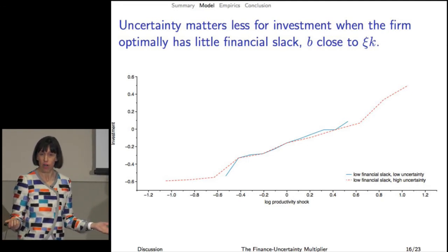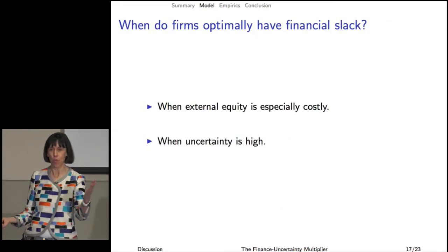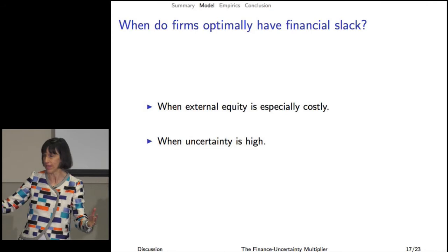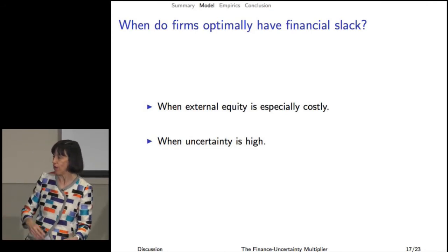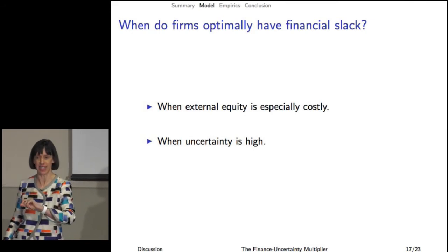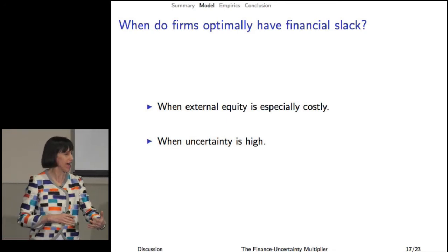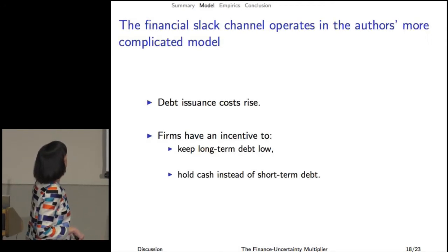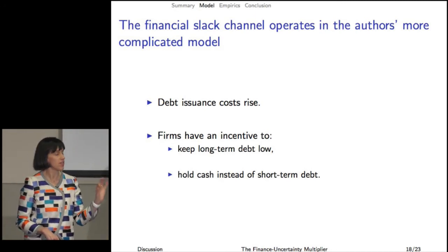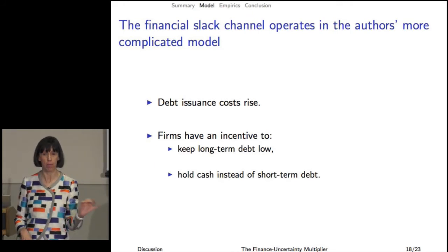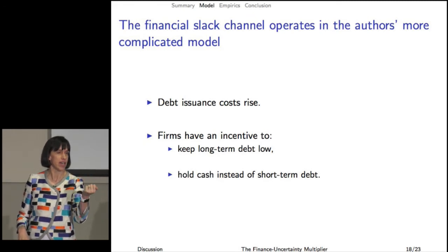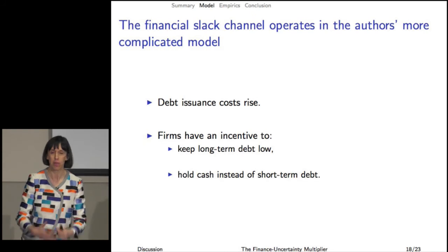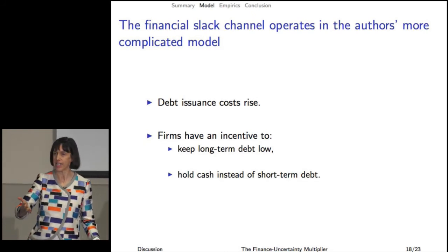When does the firm have a lot of financial slack? It has a lot of financial slack when external equity finance is very costly. If you can't get external finance, then you really want to hold a lot of cash on hand or keep your debt low, or when uncertainty is high. That's the sense in the model in which there really is this interesting interaction between external financing costs and uncertainty. The financial slack channel also operates in the authors' much more complicated model. What they do is jack up the debt issuance costs, which makes the firm hold less long-term debt and actually convert short-term debt into cash, giving them a lot of financial slack — so in the low uncertainty states there's more investment.